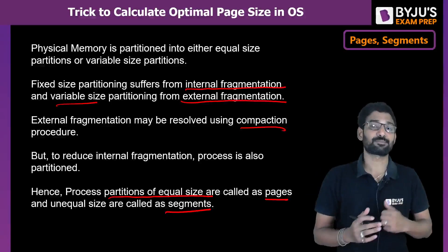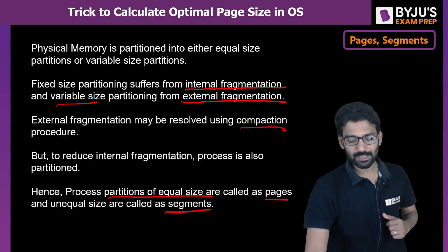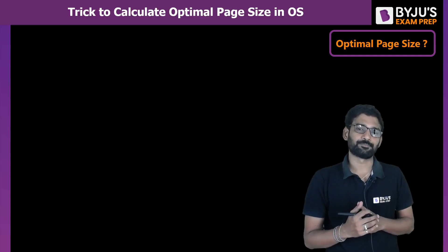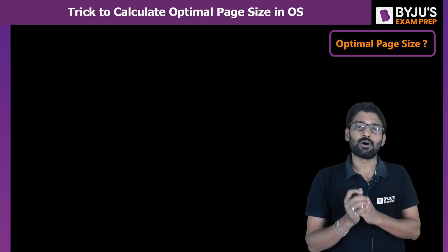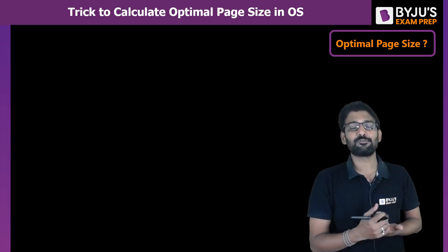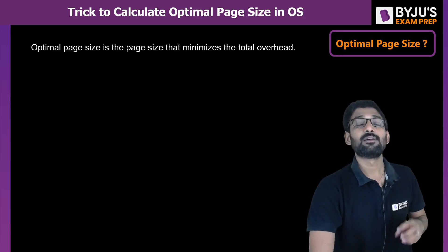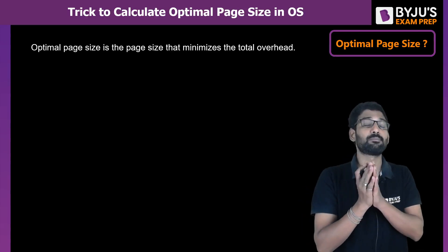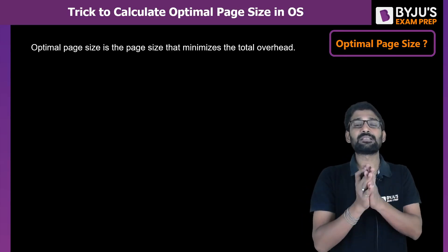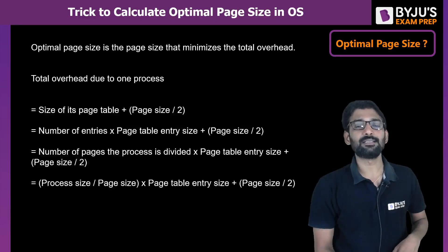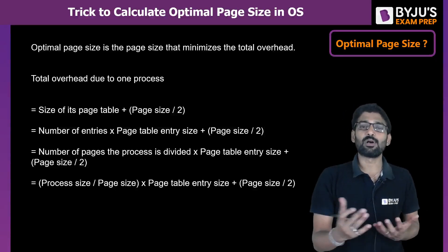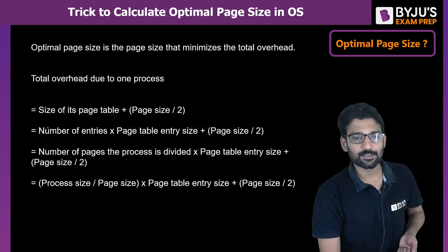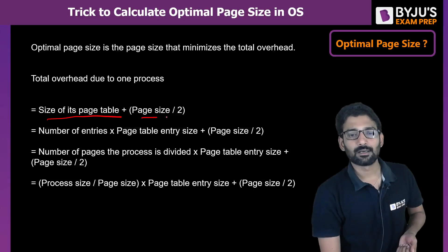Now, what should be the optimal page size? Optimal means minimizing wastage — whether to save the page in a frame or to maintain the page's information, the overhead must be minimized. To calculate this overhead, we use: overhead = size of the page table + half of the page size.